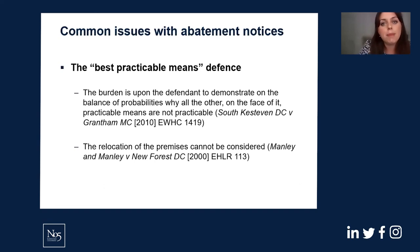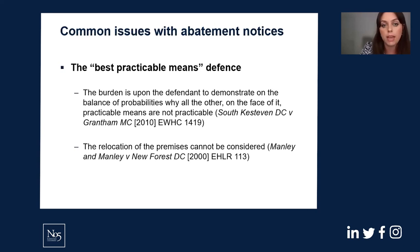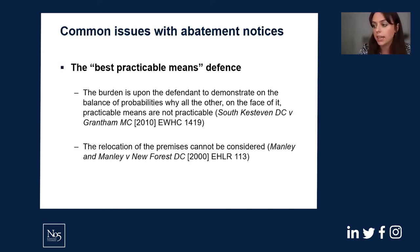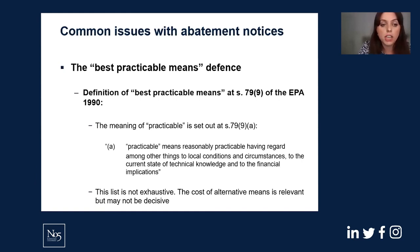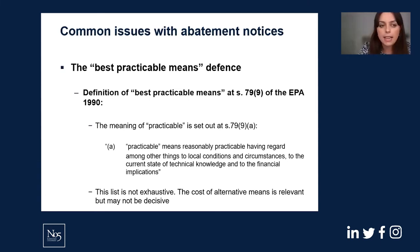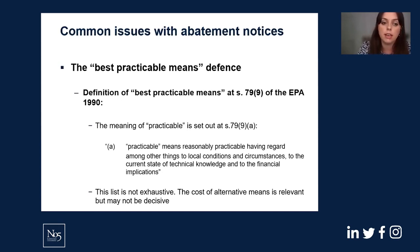Moving to the third main topic: the best practicable means defence, which is most commonly used by recipients of abatement notices. In essence, it's a defence that says you've done all that you can within your means to abate the nuisance. It should be remembered that the burden is on the defendant — the recipient of the notice — not the local authority, to demonstrate on the balance of probabilities why all other means are not practicable, as set out in the Grantham case. The meaning of 'practicable' is set out at section 79(9)(a): it means reasonably practicable, having regard to local conditions and circumstances, the current state of technical knowledge, and financial implications.